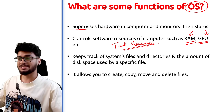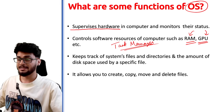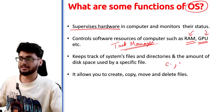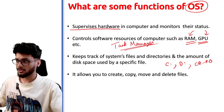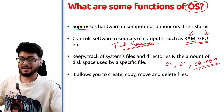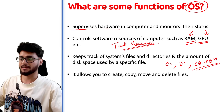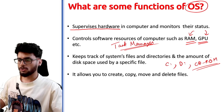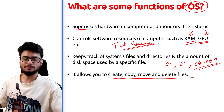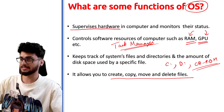The operating system also keeps track of which files are present on your system — their location and size — whether you've stored them in the C drive, D drive, or CD-ROM drive. It also allows you to copy, delete, and move files. These are some key functions of the operating system.